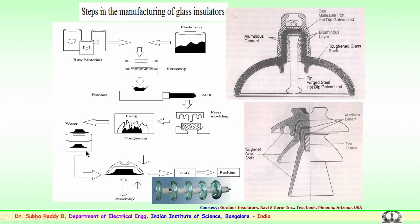The shells are taken out and assembled along with the cap and pin using suitable coatings and alumina cement. After finishing, the glass insulators undergo various mechanical and electrical tests at the factory — known as routine tests. After inspection and quality measures are met, insulators are packed in crates and dispatched to the required locations.